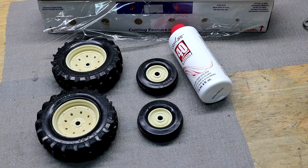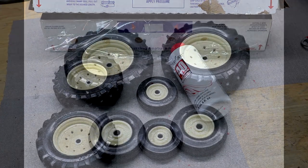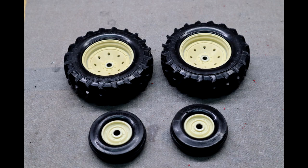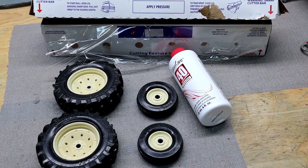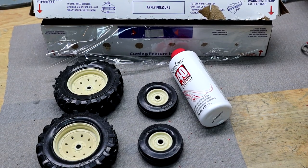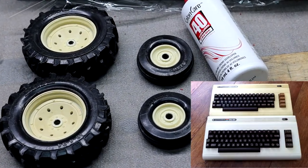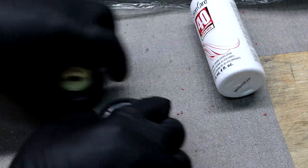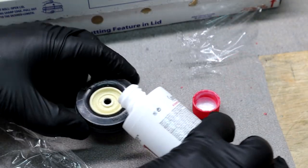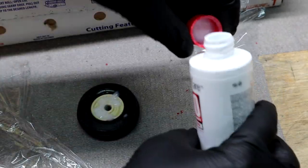Now before we get to the sandblasting, I want to take care of these wheels. As you notice, they're a little yellowed. They're supposed to be a little whiter, more of an off-white. But the sun has aged these. And here's a little trick called Retrobrite that I actually picked up from the 8-bit guy who restores vintage computers. Using this salon cream type product, it's like 40% hydrogen peroxide.